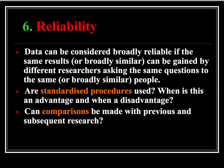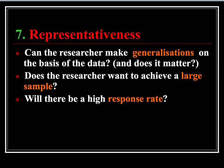When considering if a method is reliable, it can be considered broadly reliable if the same results can be gained by different researchers asking the same sorts of questions to the same or broadly similar people. The key thing to ask is: are standardised procedures used, such as the same questions? Can comparisons be made with previous and subsequent research? Representativeness: can you generalise the findings? Is your sample broad enough, can you have a large sample, and will there be a high response rate?